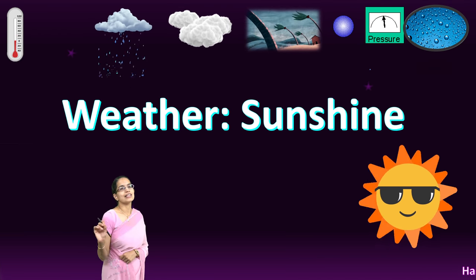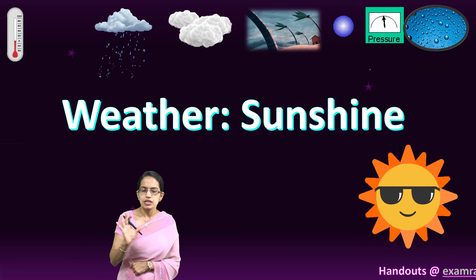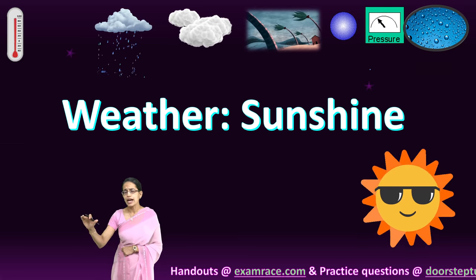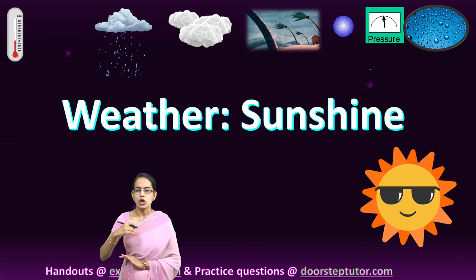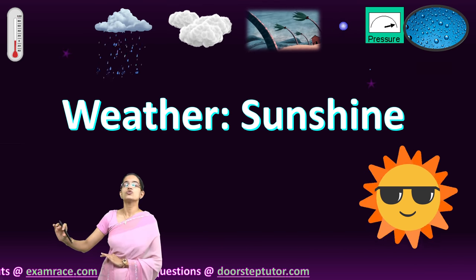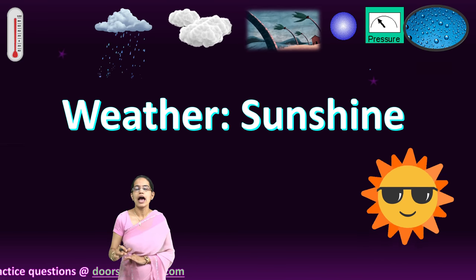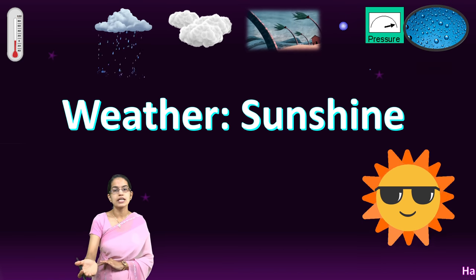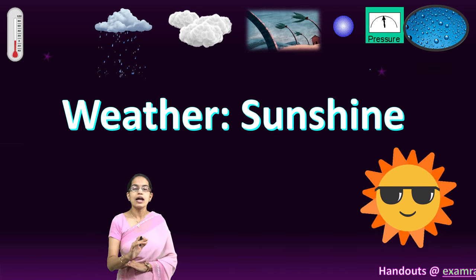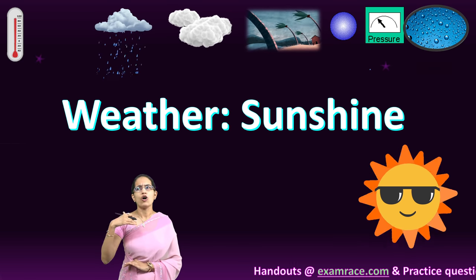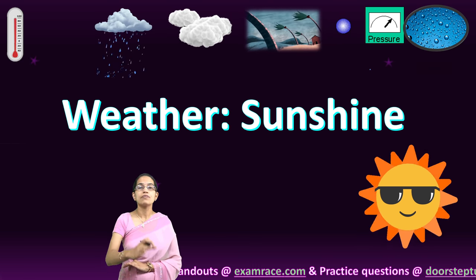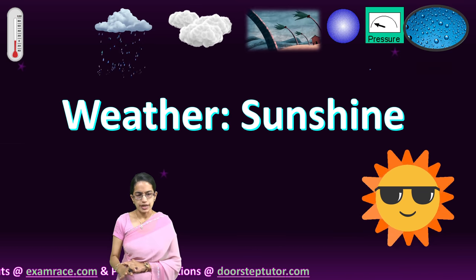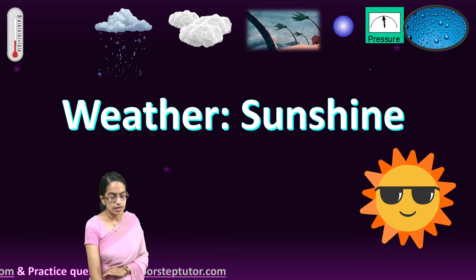The next is sunshine. Sunshine is determined by the latitude — whether you are on the poles or the equator. Places close to the equator or tropical regions would have a higher amount of sunshine. Day durations would have higher sunshine in contrast to night. If the atmosphere has haze, fog, or mist, it would definitely reduce visibility due to reduced sunshine. So sunshine is another important criteria.